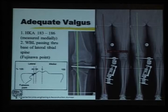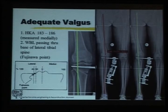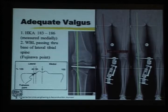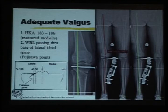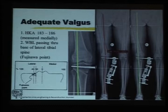What is adequate valgus? The literature identifies two indices. First, the hip-knee-ankle angle should be 183 to 186 degrees — normal mechanical axis is 180, but because you already have medial compartment arthritis you want to shift some load to the lateral side. Too much valgus recreates the problem laterally, hence this narrow three-degree range. Second, the weight-bearing line should pass through the base of the lateral tibial spine — the Fujisawa point. These two indices together confirm appropriate correction.